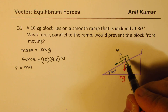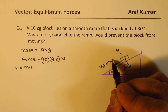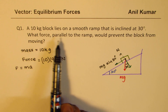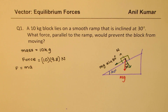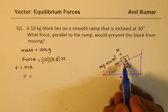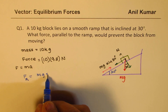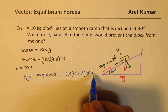The force which helps move the block downwards is mg sinθ, where θ is 30 degrees. When we ask what force applied along the ramp prevents the block from moving, we need a force equal in magnitude but in the opposite direction. The resultant force here is mg sinθ, so in our case: 10 × 9.8 × sin(30°).